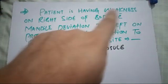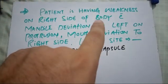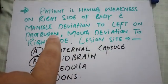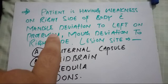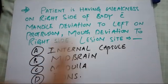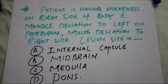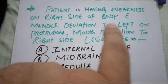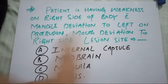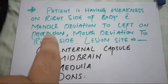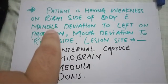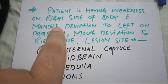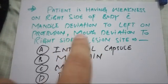The patient is having weakness on the right side of the body with mandible deviation to the left on protrusion of the mandible — deviation to the lesion side. In this MCQ, mandible deviation to the left side on protrusion means the fifth nerve, the trigeminal nerve, is involved. The pterygoid muscles are supplied by the trigeminal nerve, so the fifth nerve is involved.